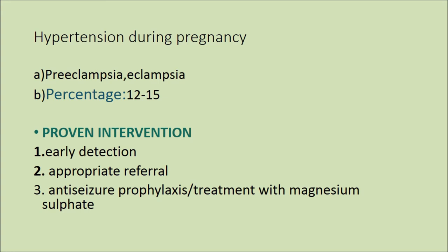During pregnancy, conditions such as preeclampsia and eclampsia account for 12 to 15 percent of cases in the country. Proven interventions are early detection, appropriate referral, anti-seizure prophylaxis, and treatment with magnesium sulfate.